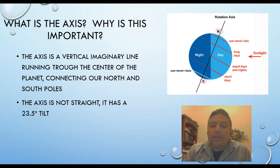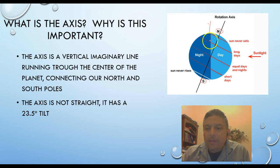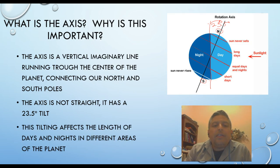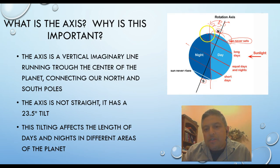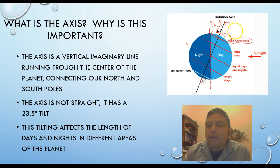The axis is not straight as you can see — it's tilted. If it was straight it would be something like this, but we know it's not. There's a little tilt and that tilt is at 23.5 degrees. This tilting is the one that affects the length of days and nights in different areas of the planet, and we can see in this picture how the sun never sets over here — you're going to be under 24 hours of daylight.